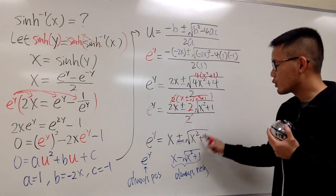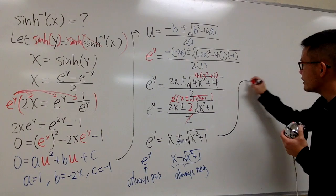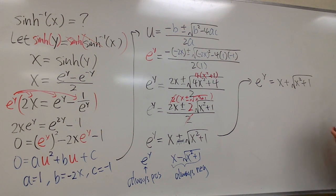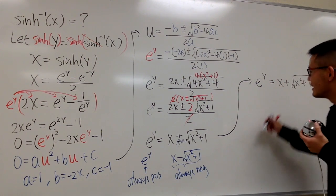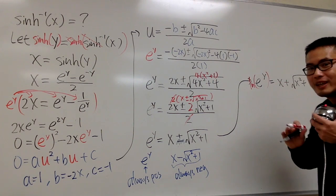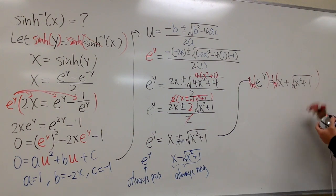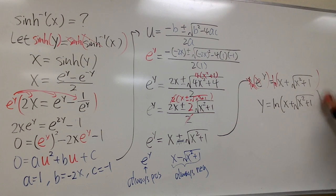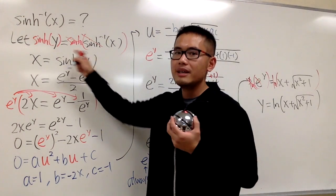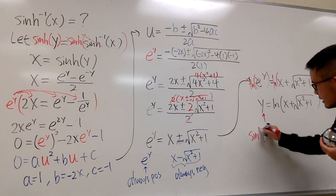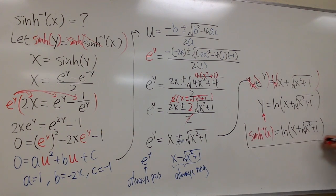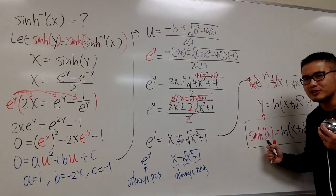So eʸ equals x plus √(x² + 1). To isolate y, we take the natural log on both sides: ln(eʸ) = ln(x + √(x² + 1)), which gives y = ln(x + √(x² + 1)). Since y = sinh⁻¹(x), the inverse sinh x equals ln(x + √(x² + 1)). This is the expression for the inverse hyperbolic sine function.